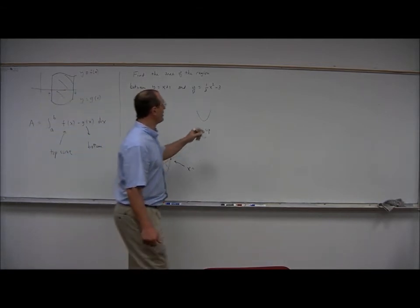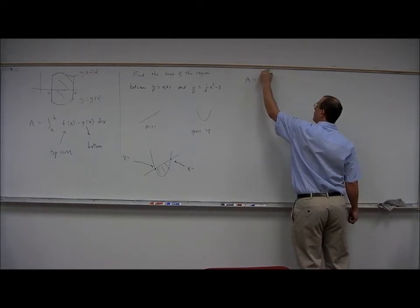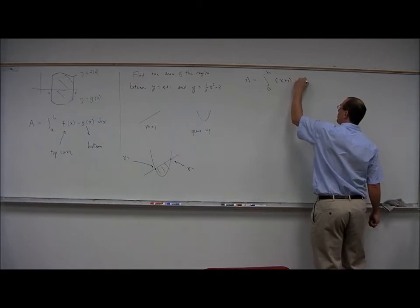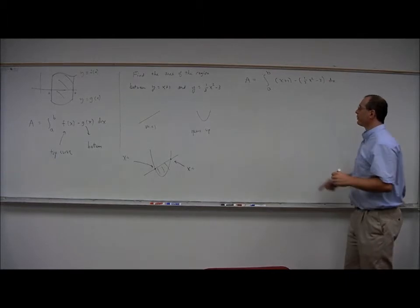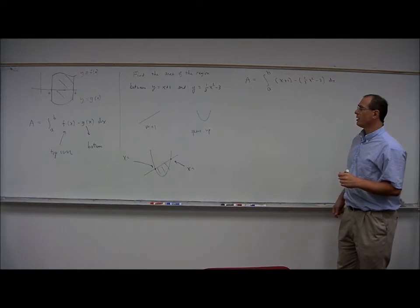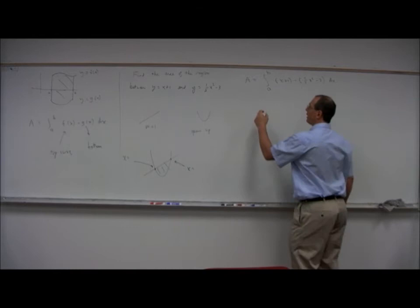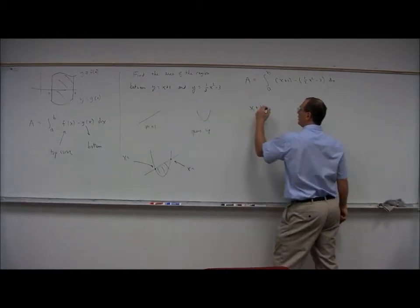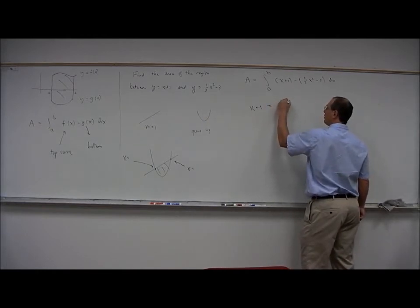The area is going to look like an integral from A to B of the top curve, which is x plus 1 minus the bottom curve, which is 1 half x squared minus 3 dx. So we need to find A and B. To do that, we need to figure out where these two curves intersect. Algebraically, we solve x plus 1 equals 1 half x squared minus 3.